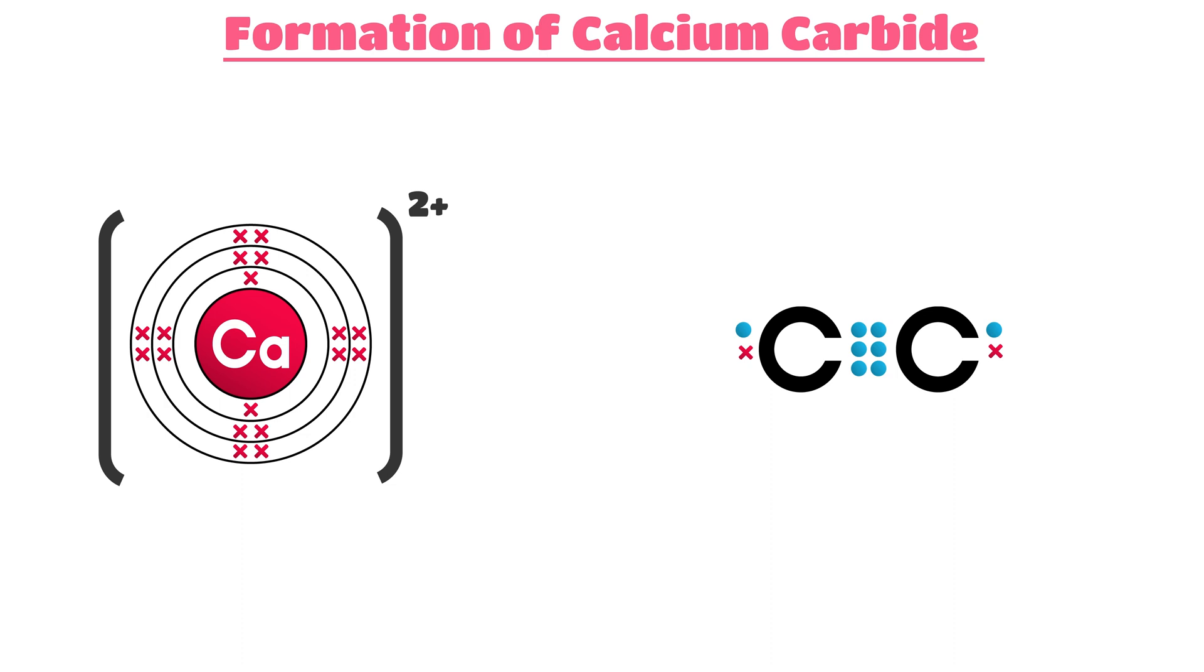Therefore, the two electrons lost by calcium will be gained by the diatomic carbon atoms, forming a carbide radical with a charge of negative two.